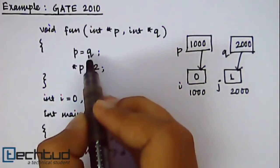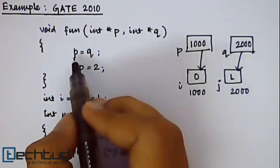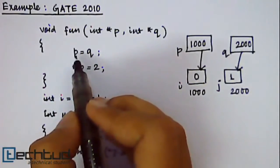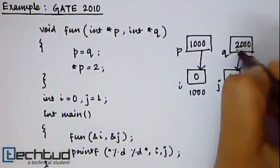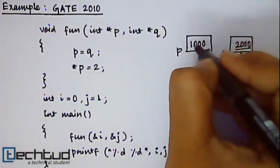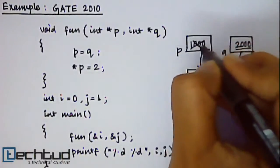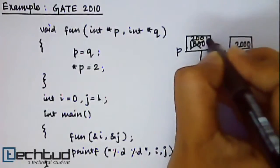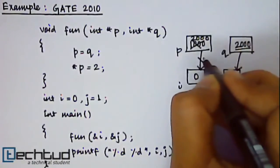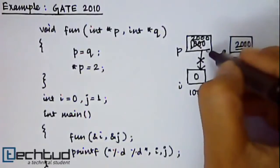All right, so p is pointing to i, q is pointing to j. Now what is happening inside the function? We are assigning the value of q inside the variable p. So now 2000 is being assigned inside p.